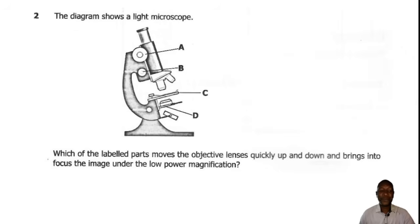Question 2. The diagram shows a light microscope. Which of the labelled parts moves the objective lenses quickly up and down and brings into focus the image under low power magnification? So to bring the image into focus under low power, you need the coarse adjusting knob. So the correct answer is A.